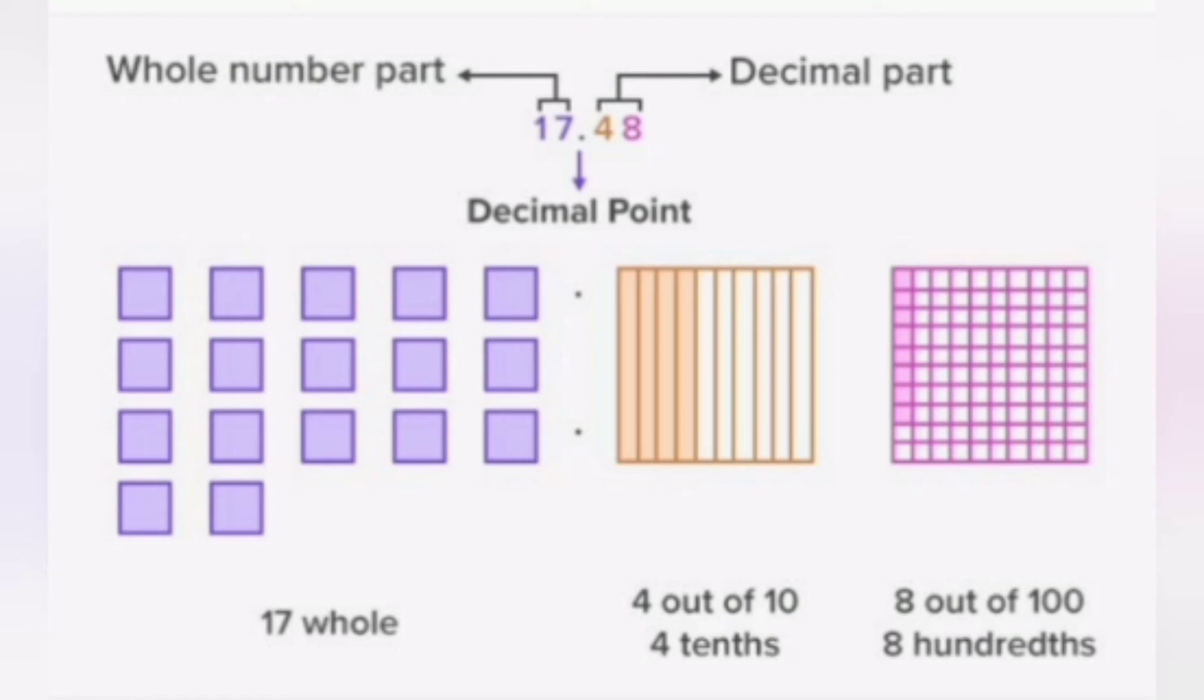Let's see, 17 is the whole number part, and 48 is the decimal part. The decimal point separates them. We read this as 14.48.